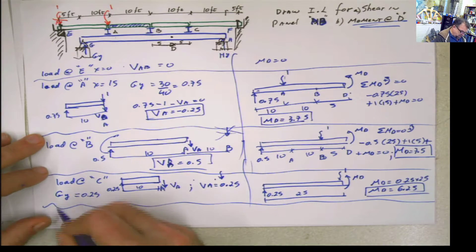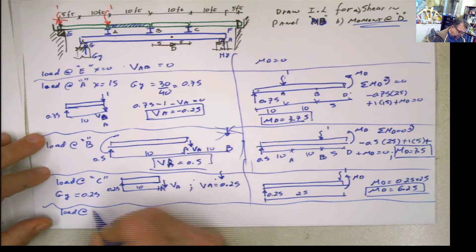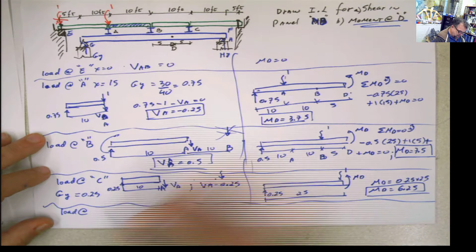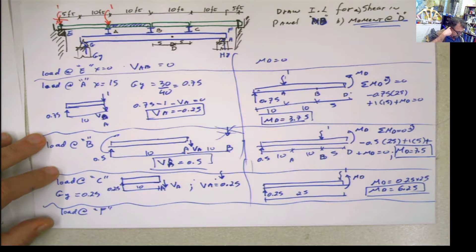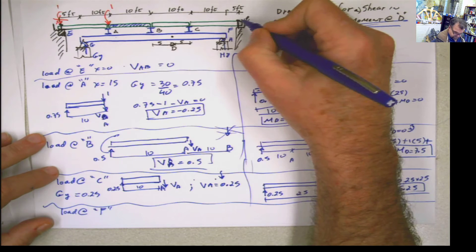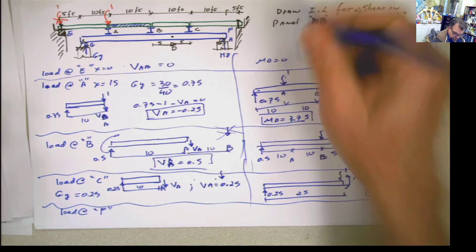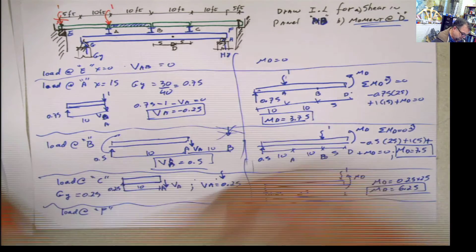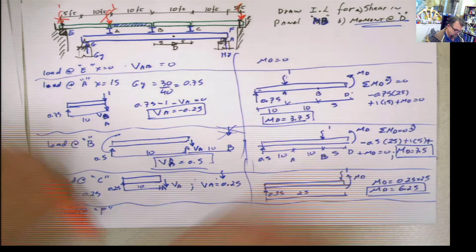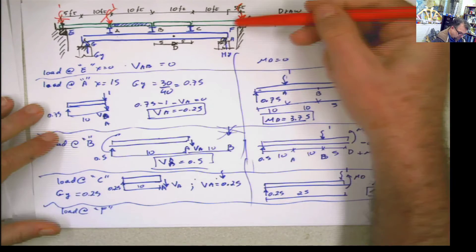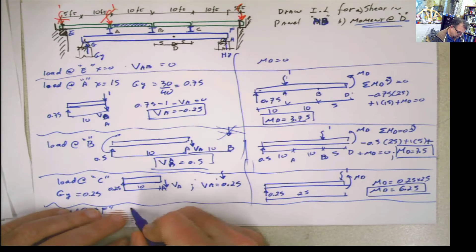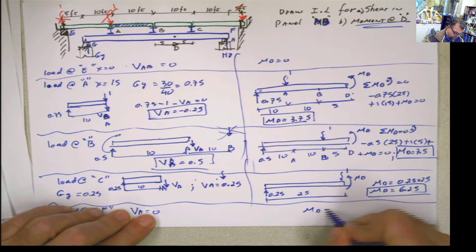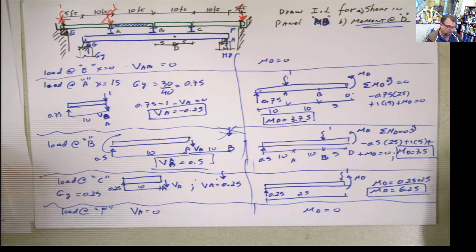Last but not least, when the load is at F: that load is transferred directly to the wall and nothing is on top of the beam. So V sub A is 0 and MD is also 0, because there is no load applied there.